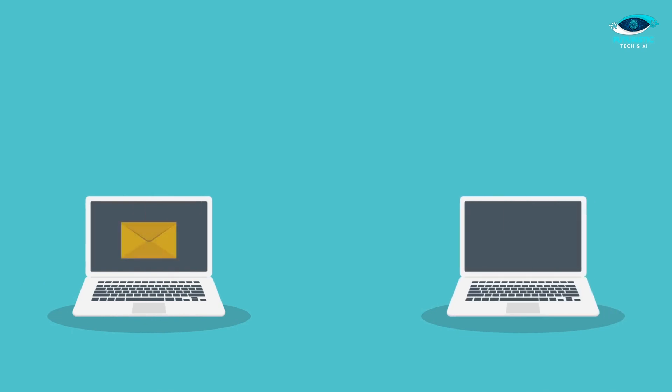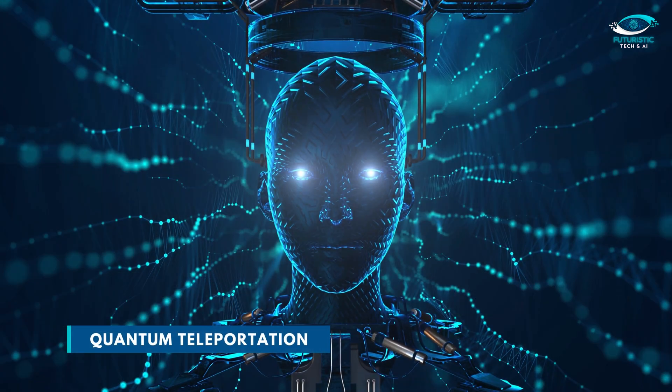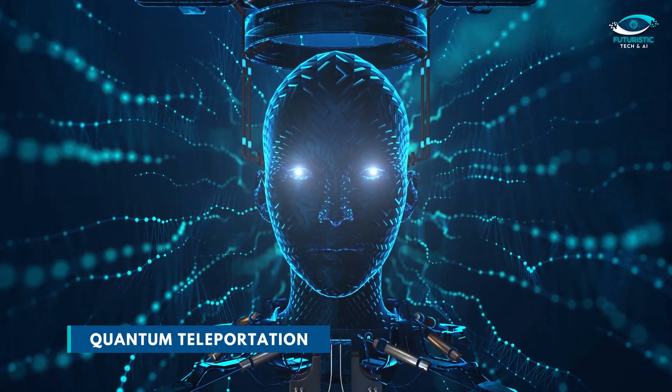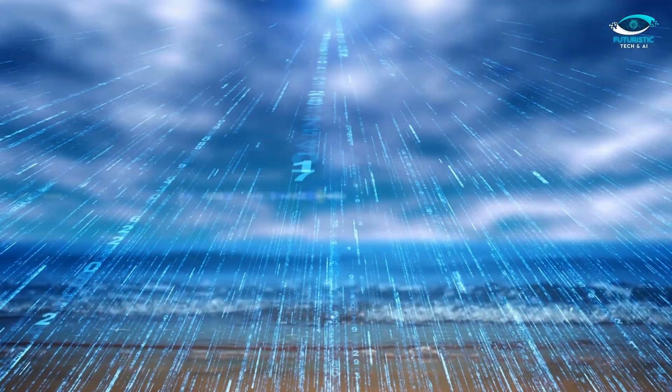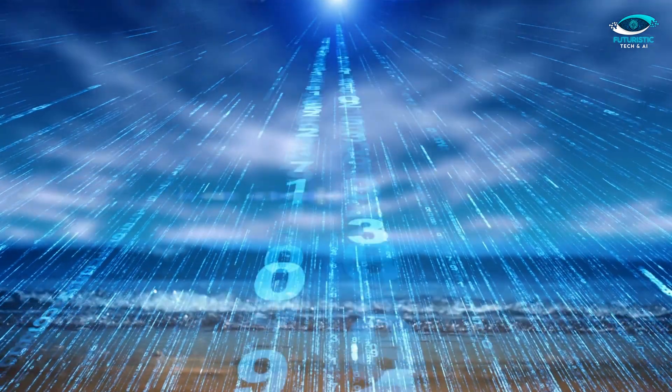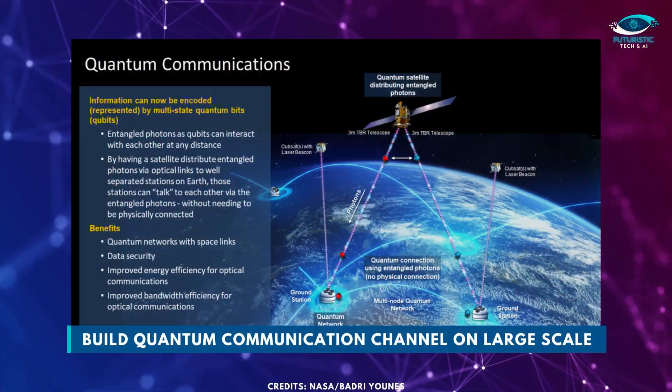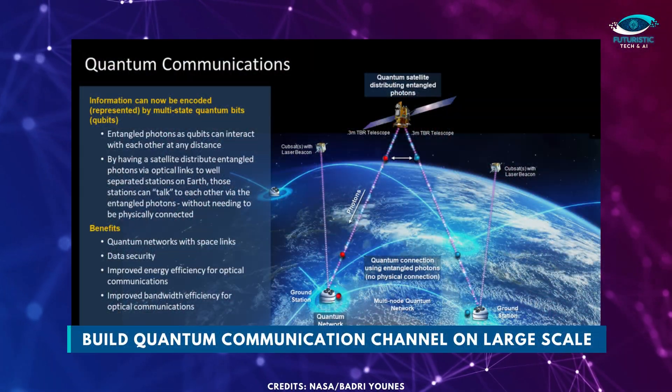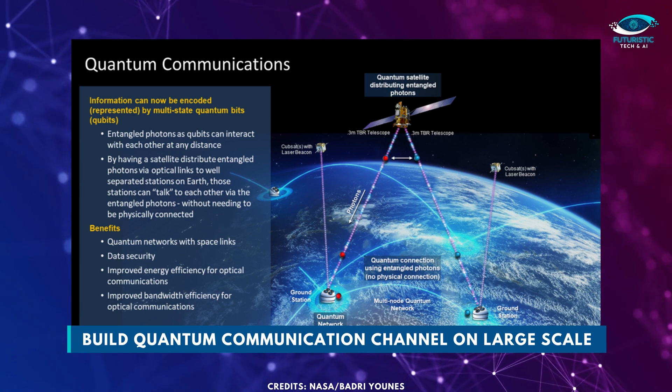Quantum teleportation. The technique which is used to transfer the information from one source, sender, to another source, receiver, quantum mechanically is called quantum teleportation. It's the concept that enables us to distribute quantum entanglement over large distances and allowing to build quantum communication channel on such a large scale, also to build quantum network on a global scale.